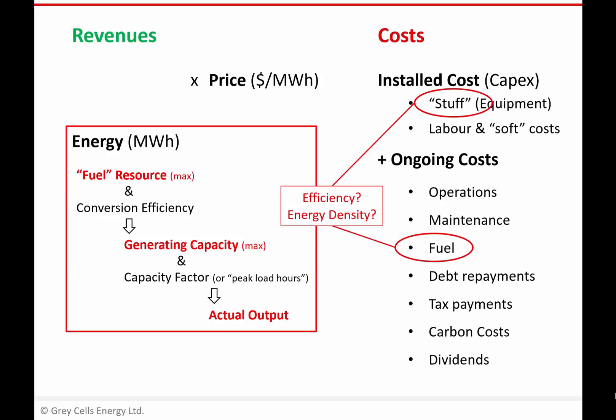For a solar farm, if we use lower efficiency panels we'll need to collect more solar energy to generate the same electricity output, so we'll need more equipment. Or if the area power density of our solar resource is less — i.e. we're in a less sunny location — even with high efficiency panels we'll still need to collect over a wider area. If we have both low efficiency and a poor solar resource, we need even more equipment and a bigger solar farm. Depending on relative costs, that may mean more capital costs, but even if the panels themselves weren't more expensive in total, there's more to install, more land cost, more to clean, and bigger maintenance costs — various costs that go along with having a larger plant footprint or a less energy-dense resource.